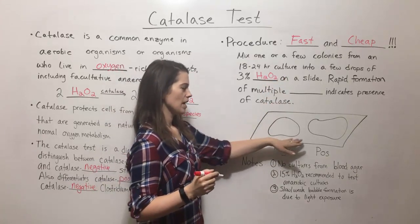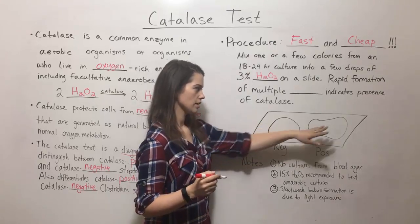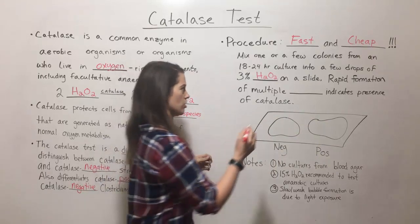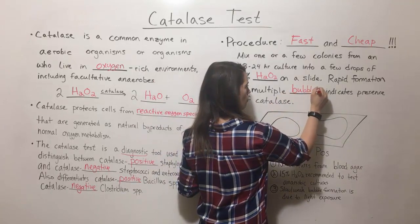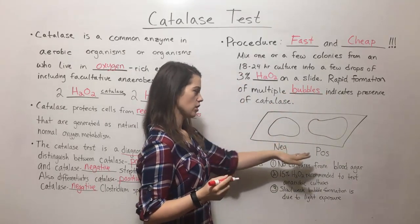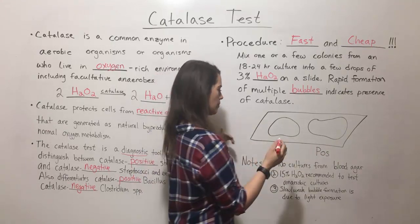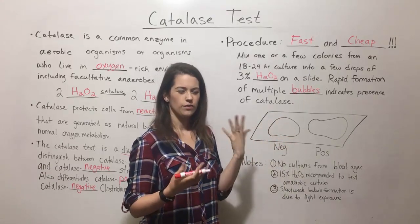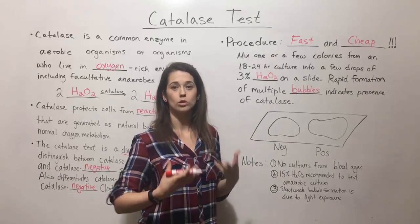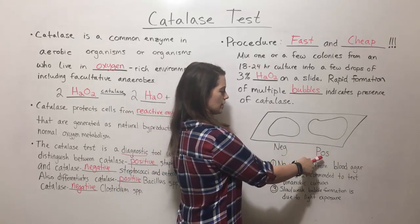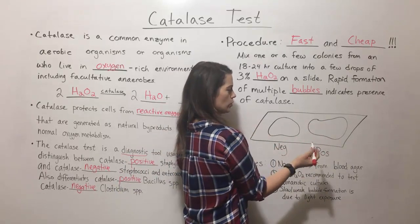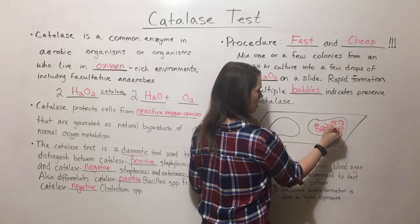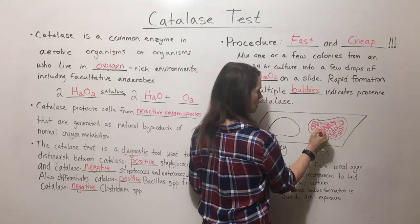So here we have a slide, and here we have a few drops of hydrogen peroxide. If you have rapid formation of a large amount of bubbles, that means you have a catalase-positive organism. If a catalase-negative organism is added to the hydrogen peroxide, you won't see any bubbles form, or if there are any bubbles they'll form slowly and it'll be a very weak reaction. Whereas if it's a catalase-positive organism, you're going to see really rapid formation of lots and lots of bubbles.